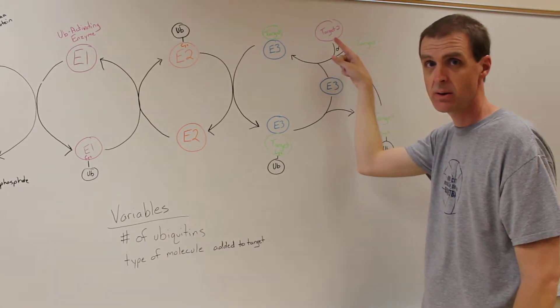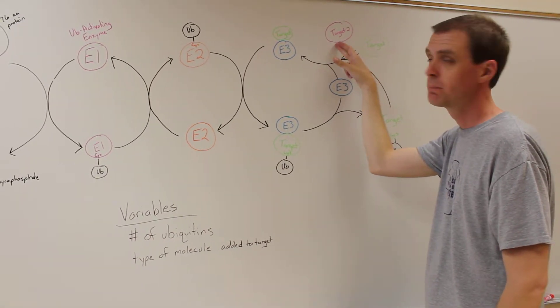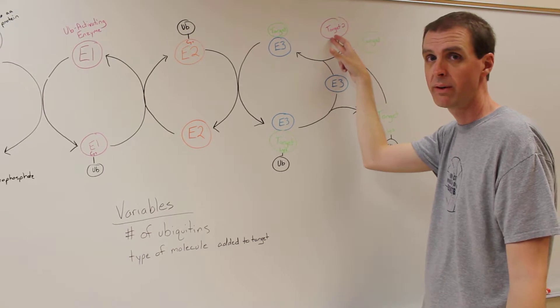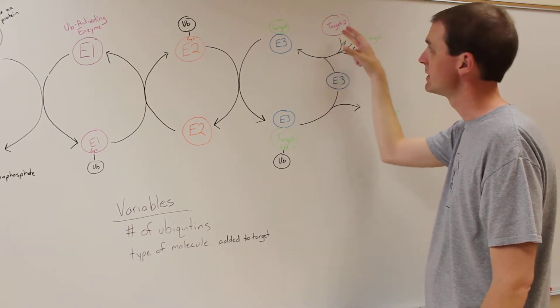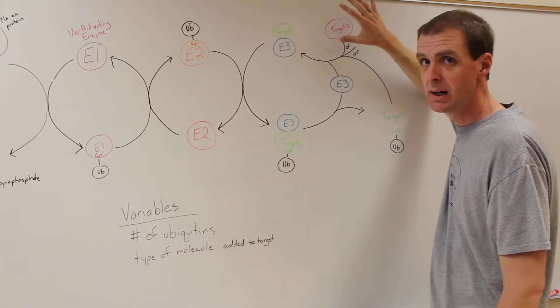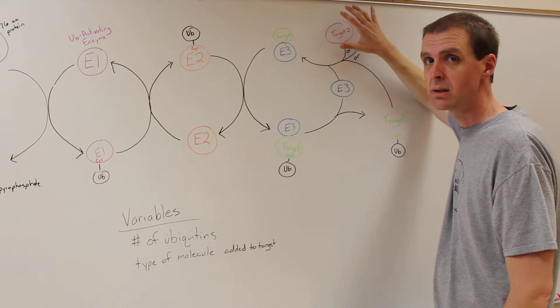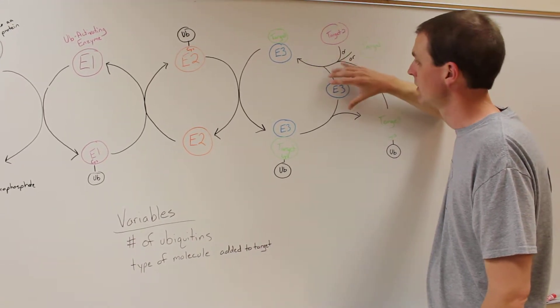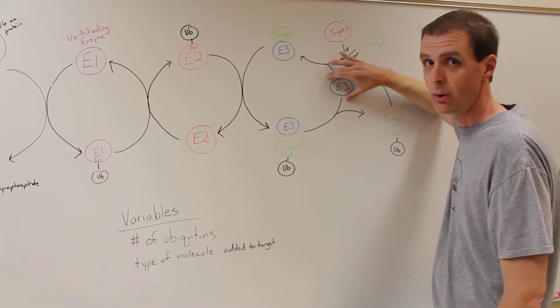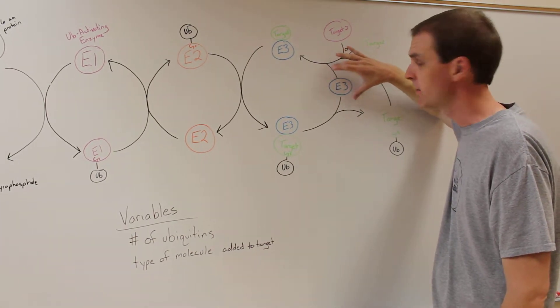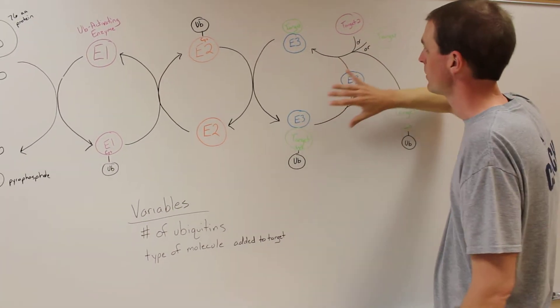But the E3 might also have another protein target or more than one other target in the cell. So there is going to be a subset of proteins that the human genome encodes that are going to be targeted for post-translational modification by the E3 enzyme through this pathway.